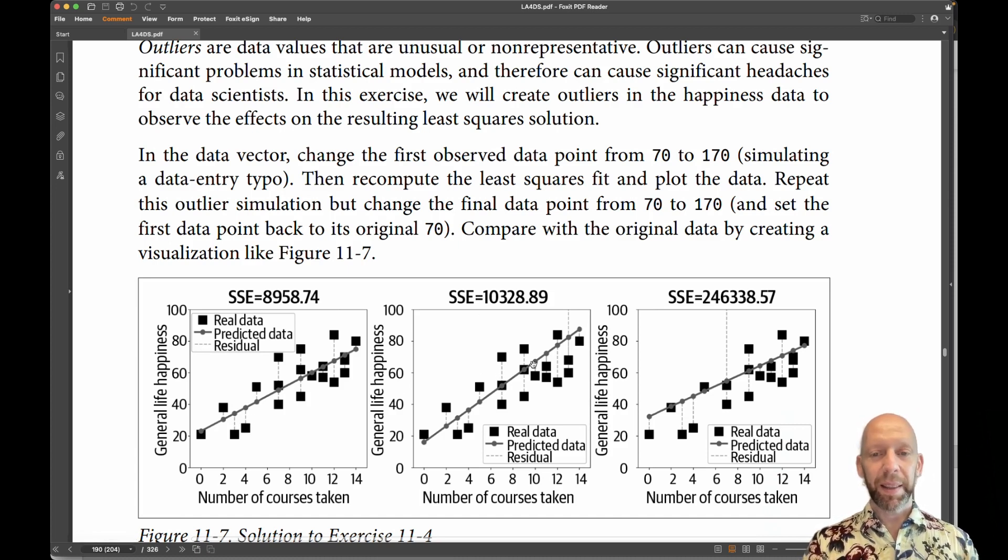Here what you see is the last data point, or I think this was the first data point, which is actually this data point over here, translated from 70 to 170. So there's one outlier at 170. You see the line here, but you don't see the data value because it's off the charts and I limited the y axis.